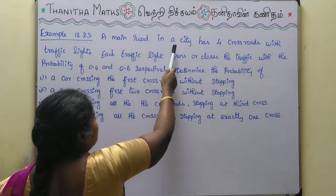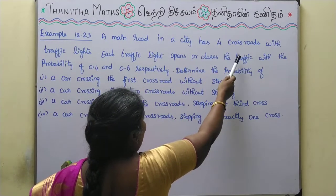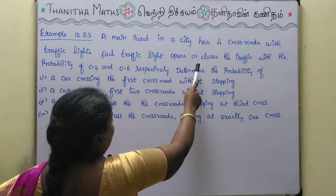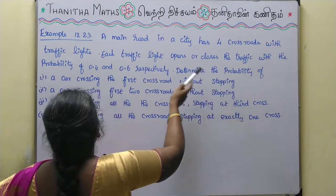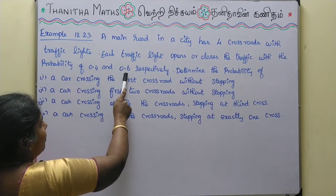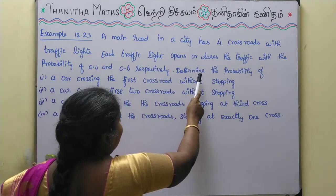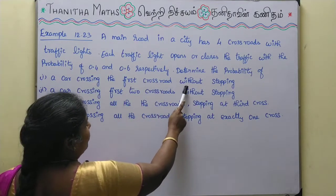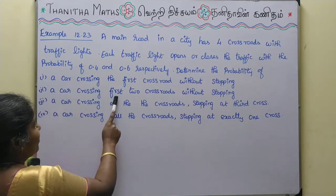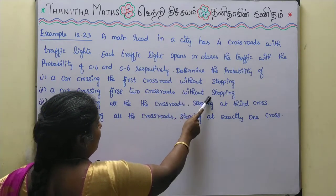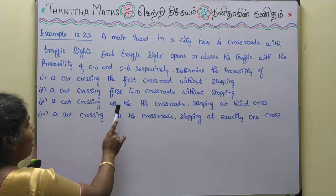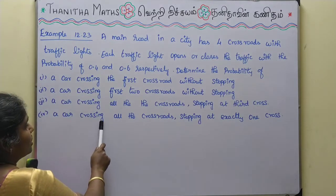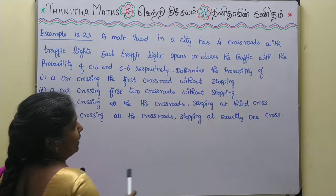A main road in a city has four crossroads with traffic lights. Each traffic light opens or closes the traffic with probability 0.4 and 0.6 respectively. Determine the probability of: a car crossing the first crossroad without stopping; a car crossing the first two crossroads without stopping; a car crossing all crossroads stopping at the third; and a car crossing all crossroads stopping at exactly one crossroad.